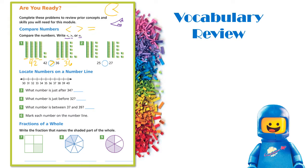For number two, we have 25 and 27. They each have the same amount of tens, so we look at the ones place. The 25 has five ones, and 27 has seven ones. So 27 has two extra ones — 27 is greater than 25. But reading from left to right, 25 is less than 27.